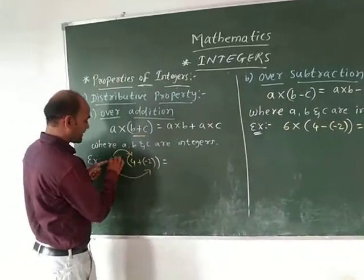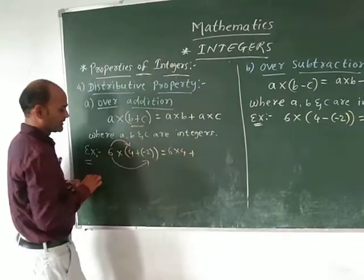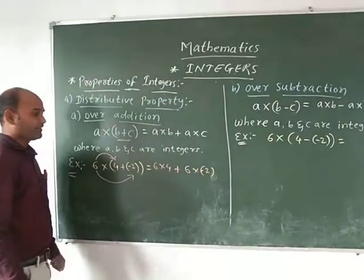Let us see here in this example, 6 multiplied by 4 plus, plus sign here. So again you can say 6 multiplied by minus 2. In this way you can write it.